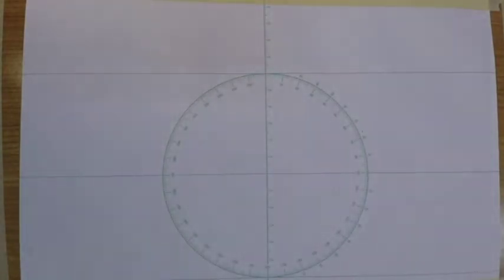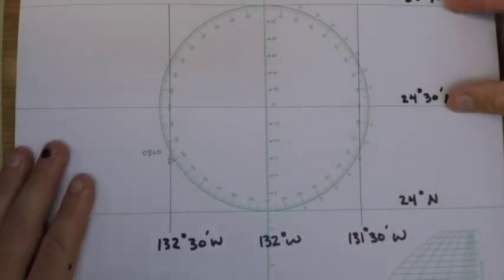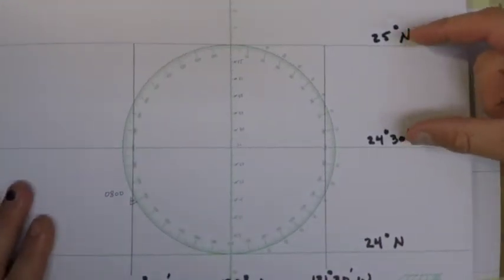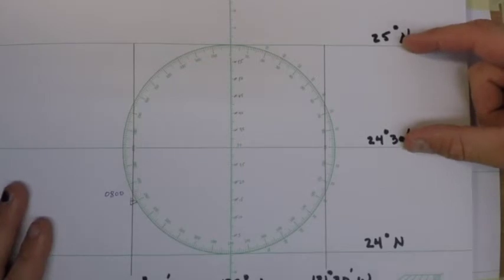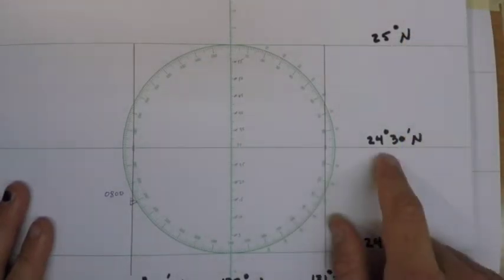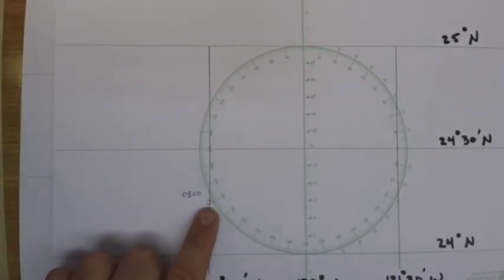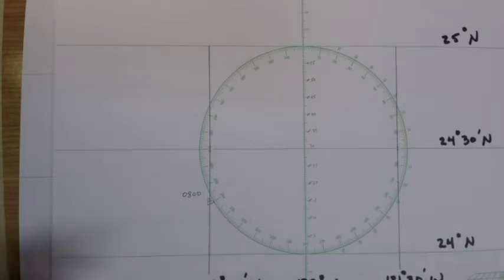First thing, why don't we go ahead and try the plotting sheet method. We need to find out where we're going to be at that time. So I set up this plotting sheet. Again, I set it up in 30 minutes—I divided it in half so each interval is 30 minutes—and I chose a mid-longitude of 132 and a mid-latitude of 2430. Here's our 8 o'clock DR position, and we said our course was 045 for a distance of about 61.5 miles.